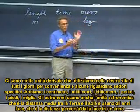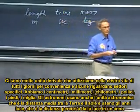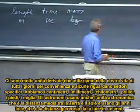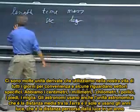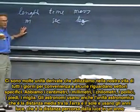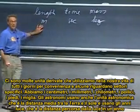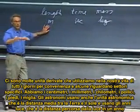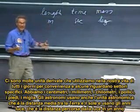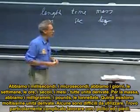There are many derived units which we use in our daily life for convenience, and some are tailored towards specific fields. We have centimeters, millimeters, kilometers, inches, feet, miles. Astronomers even use the astronomical unit, which is the mean distance between the earth and the sun, and they use light years, which is the distance that light travels in one year.